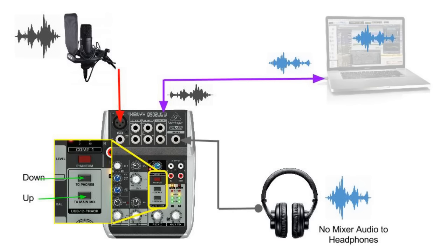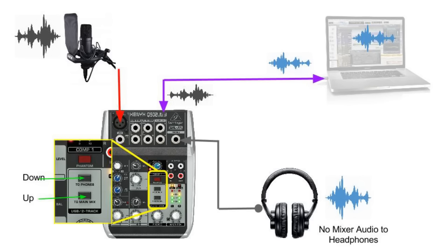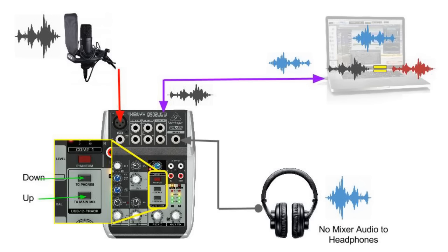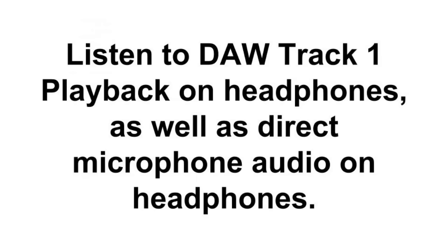If you want to be able to hear anything played on the laptop or PC via the USB connection, we need to adjust the routing settings with two phones pressed down and two main mix pressed up. This directs any audio via the USB to the headphones. At the same time, it cuts off any audio from the mixer. With this routing position, while we can hear any audio from the laptop or PC via USB, any audio from the microphone is also directly sent to the USB and we are able to record that new track, though we are not able to hear any audio from the microphone.